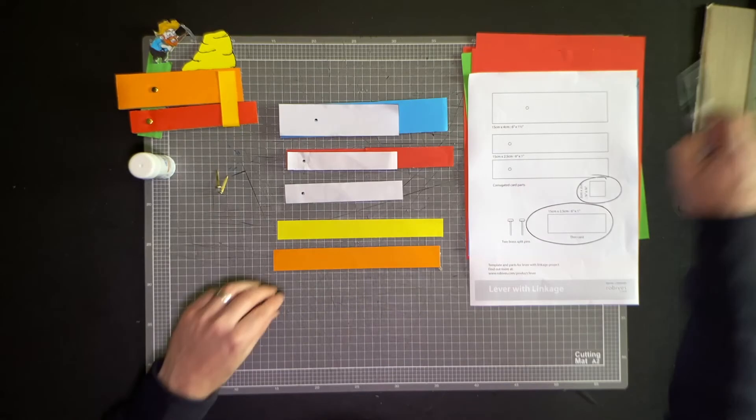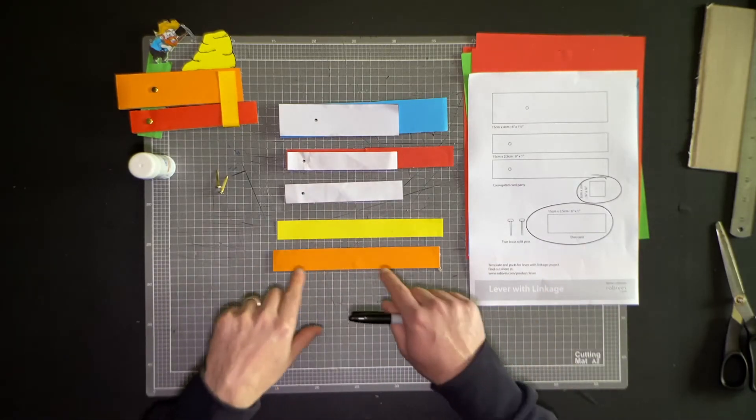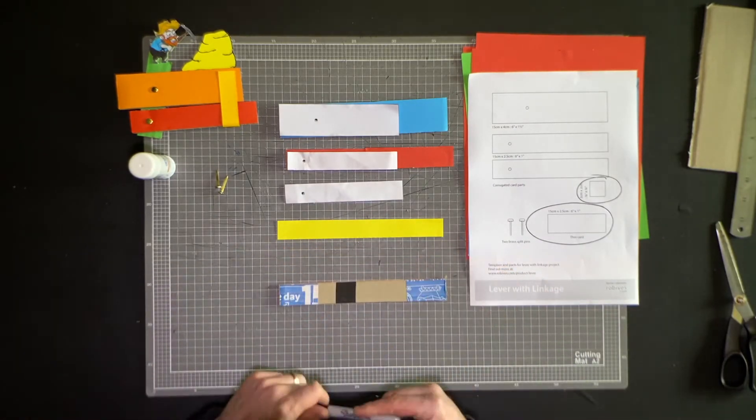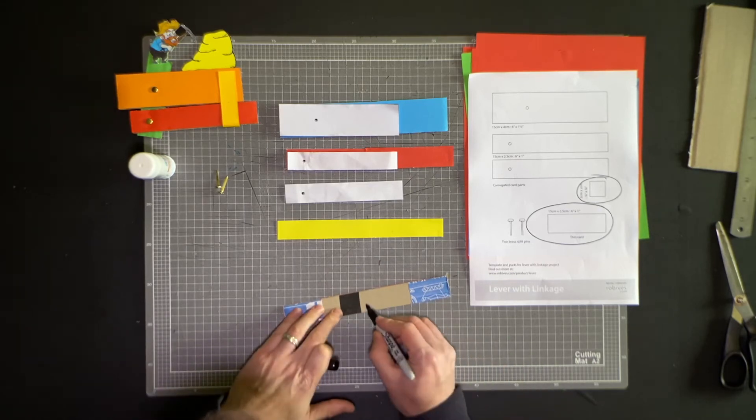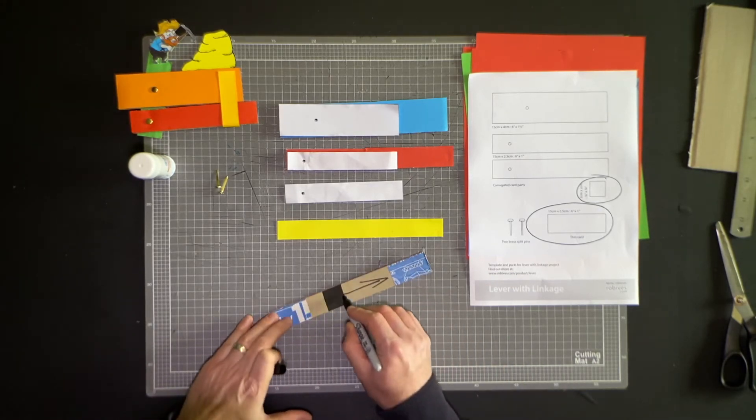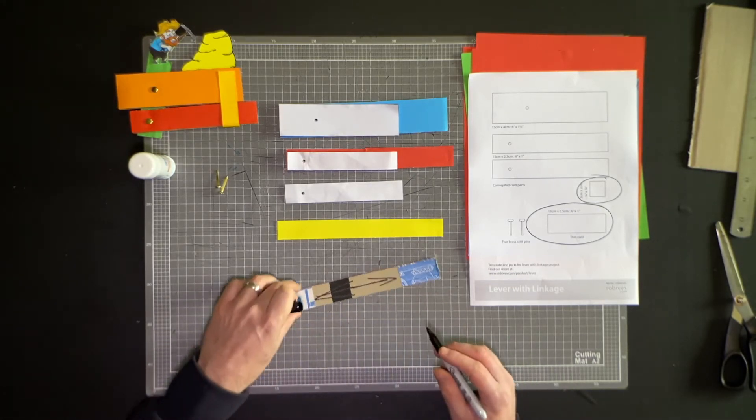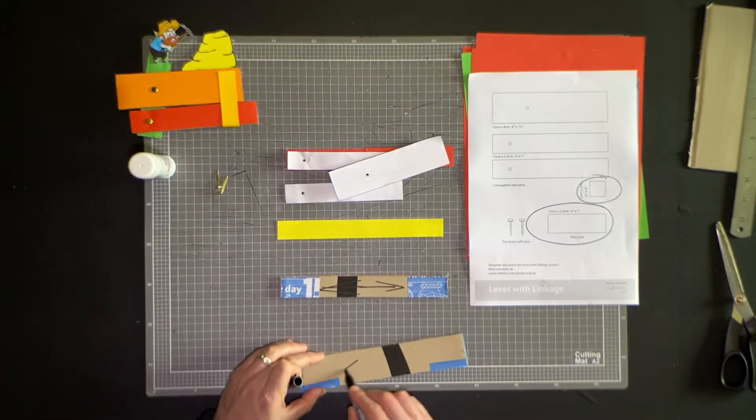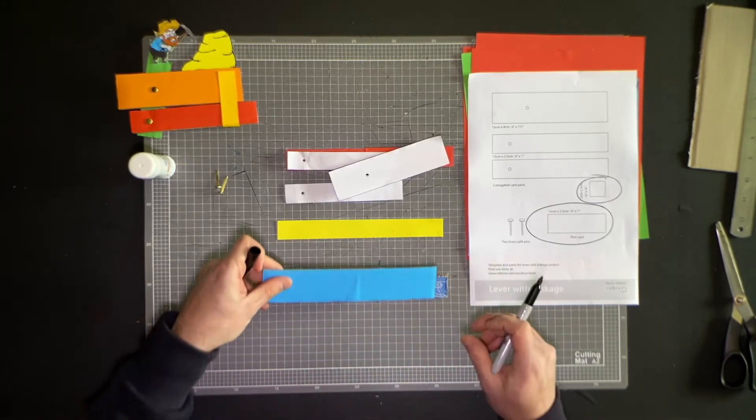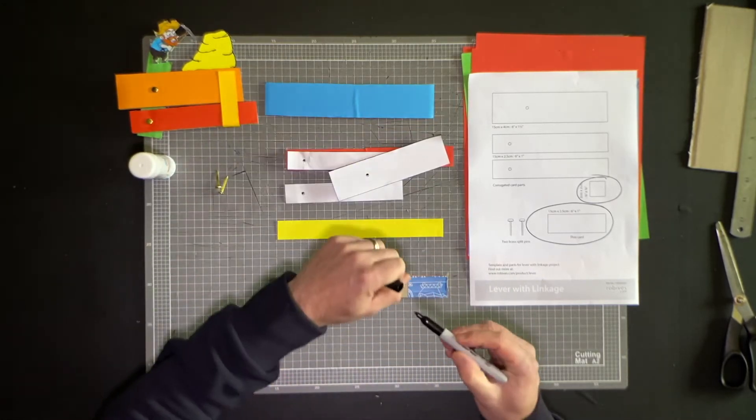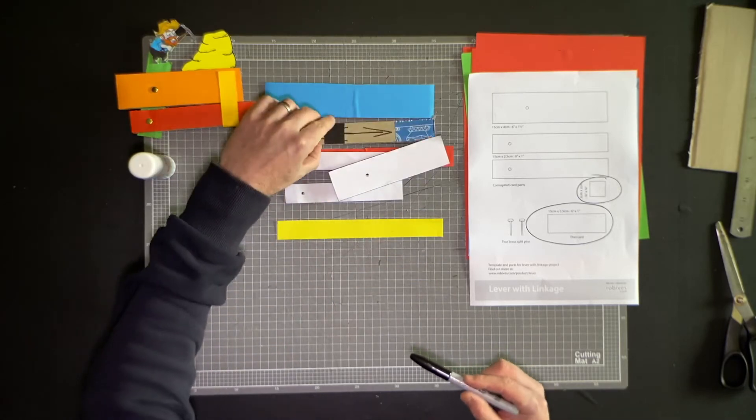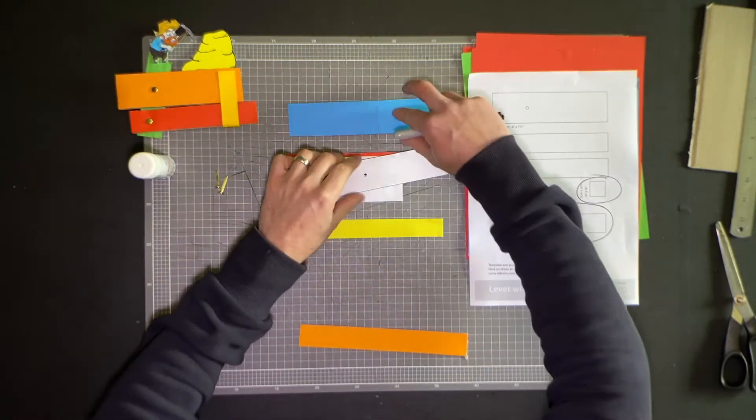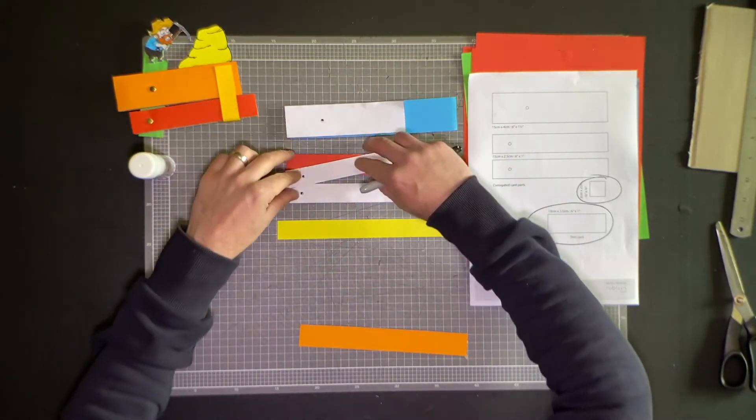One thing I should also mention is when I cut the card, I also made sure that the corrugations in the cardboard were running across the piece of card. So all the way across. That really helps with the strength of that piece of card. When you're doing that, make sure the corrugations on your cardboard line up, and that will make sure you have a stronger lever.